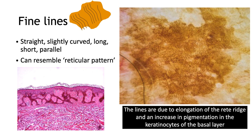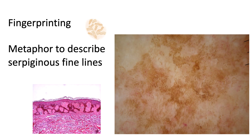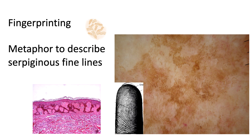The fine lines are straight, slightly curved, long, short, and parallel, and can resemble sometimes a reticular pattern. These lines are due to the elongation of the rete ridges and increasing pigmentation in the keratinocytes of the basal layer — the histopathologic correlation. Fingerprinting is the metaphor to describe these serpiginous fine lines, which correlate with elongated rete ridges with pigmentation on histopathology.